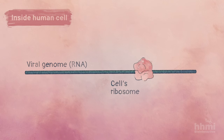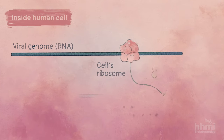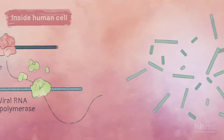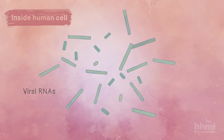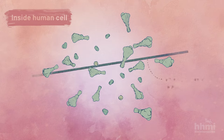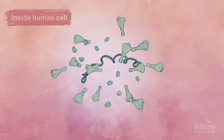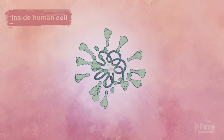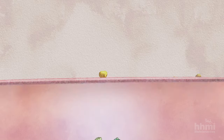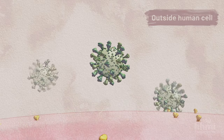The cell's ribosomes translate the virus's RNA into proteins, including viral RNA polymerase. The RNA polymerase transcribes the virus's RNA, making more RNA copies that are translated into proteins. It also makes more copies of the virus's whole genome. The new viral genome and proteins combine to make a new virus that is packaged into an envelope formed from the cell's membranes. Newly formed viruses travel to the cell's surface and are released outside the cell.